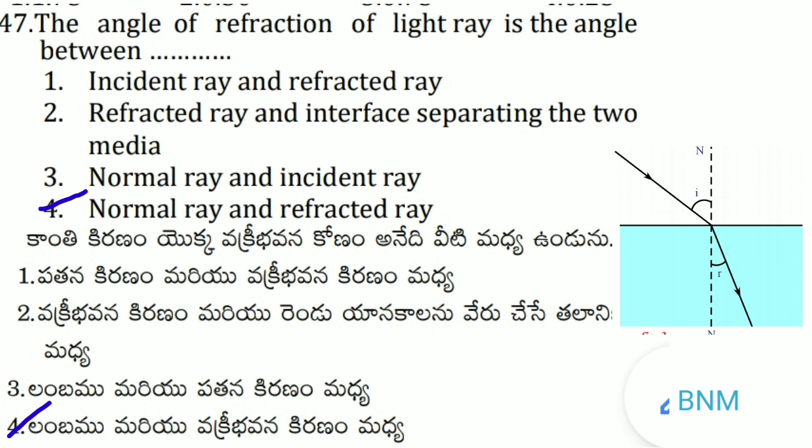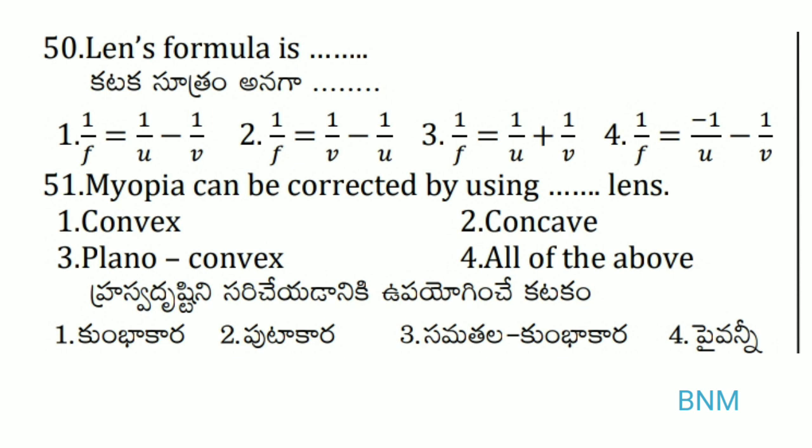Next one: lens formula. The lens formula is 1/f = 1/v − 1/u. The 2nd option is the right answer.